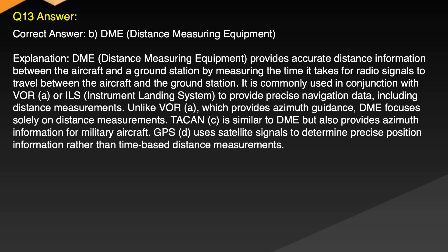Explanation: DME, Distance Measuring Equipment, provides accurate distance information between the aircraft and the ground station by measuring the time it takes for radio signals to travel between the aircraft and the ground station. It is commonly used in conjunction with VOR or ILS, Instrument Landing System, to provide precise navigation data including distance measurements. Unlike VOR, which provides azimuth guidance, DME focuses solely on distance measurements. TACAN is similar to DME but also provides azimuth information for military aircraft. GPS uses satellite signals to determine precise position information, rather than time-based distance measurements.